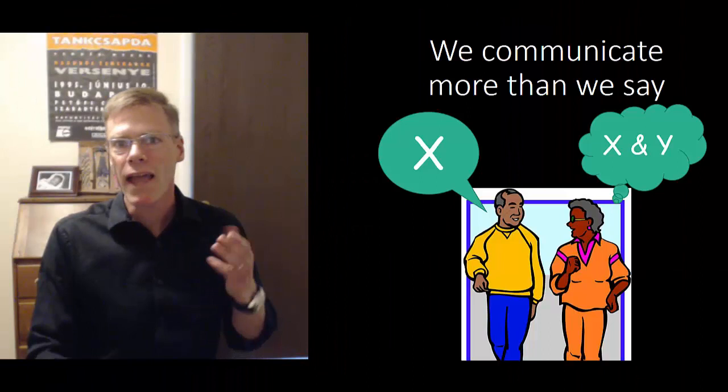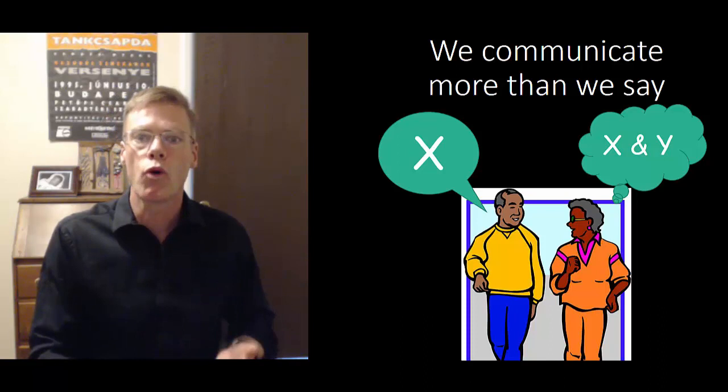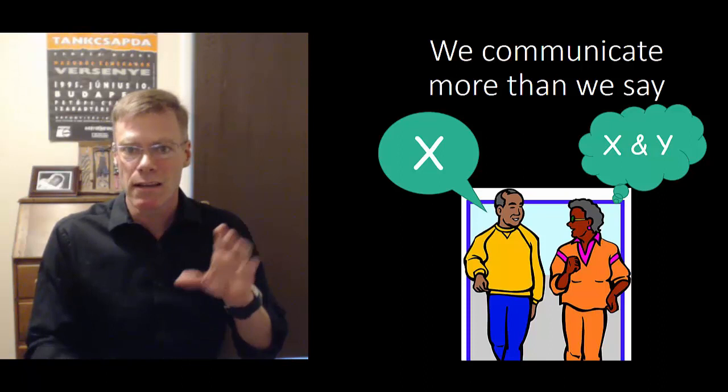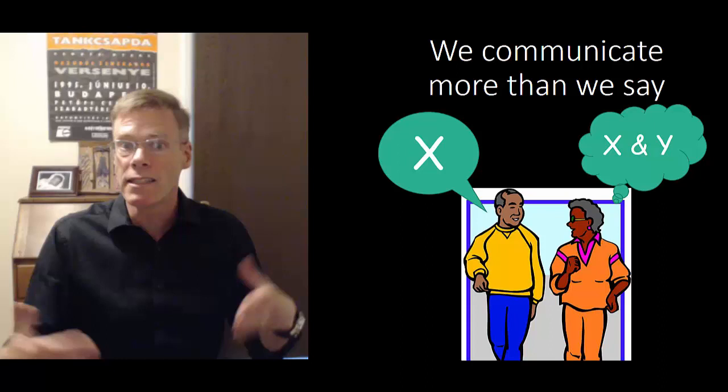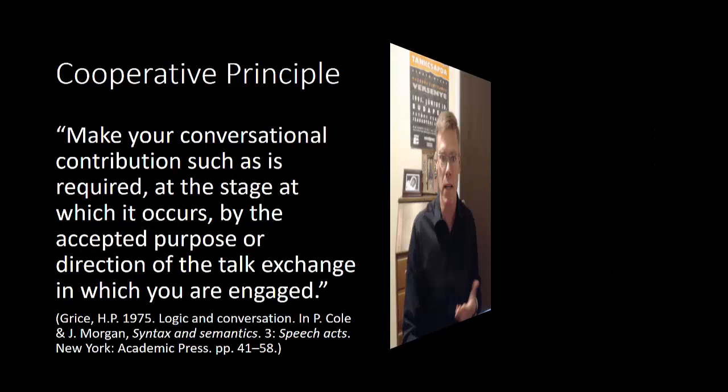The problem is that we don't understand conversation. What Grice said is that we communicate more than we say, that whenever anybody says something to us, they say something, obviously, but we understand more from it. And they intend us to understand more than they said.